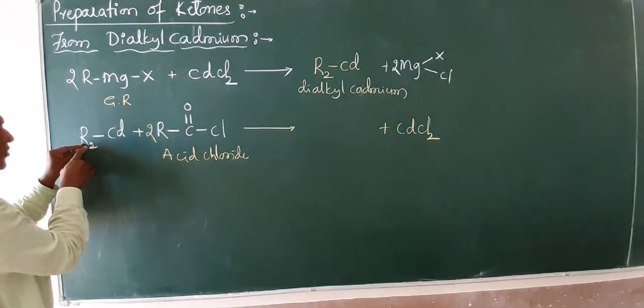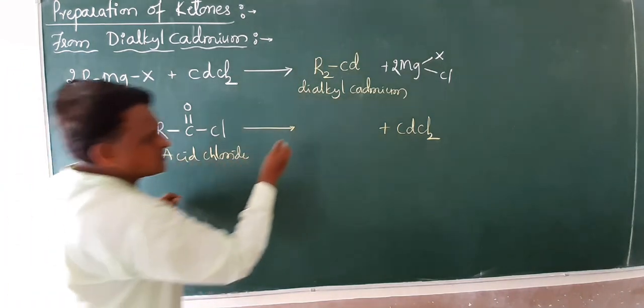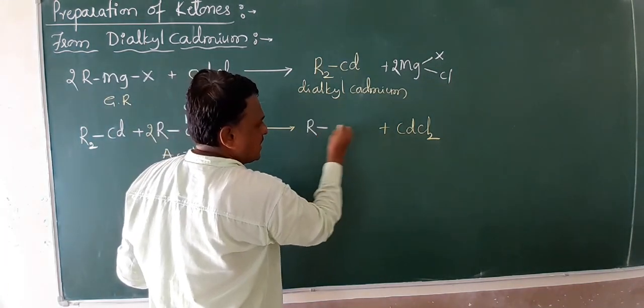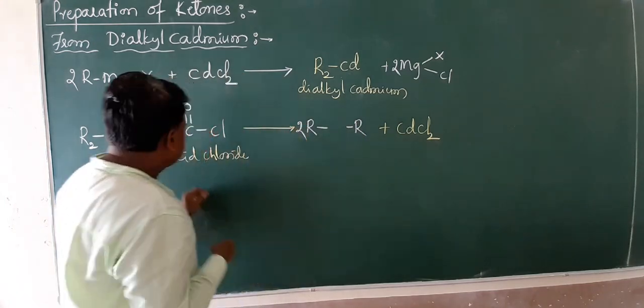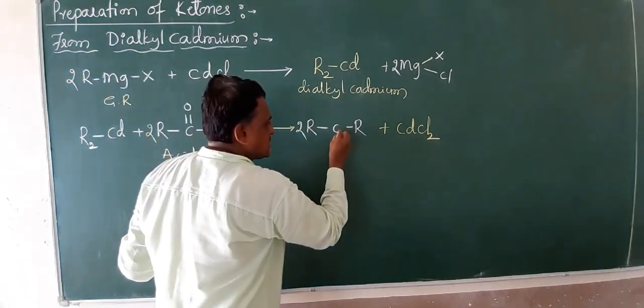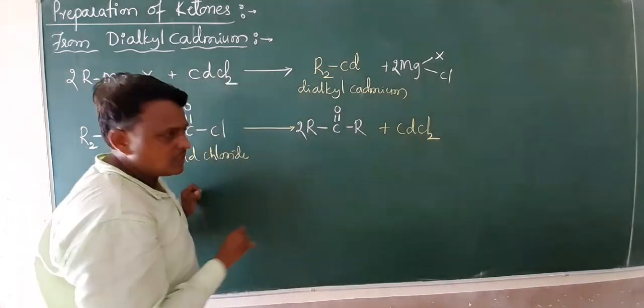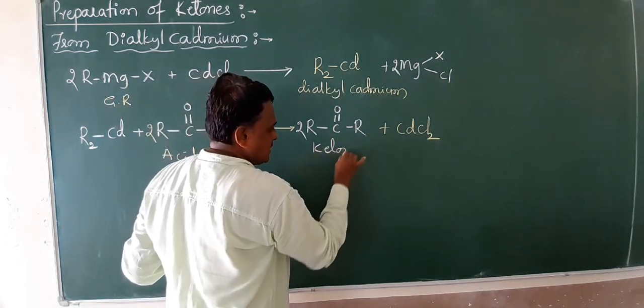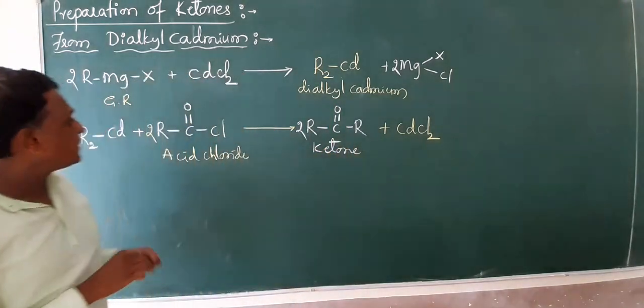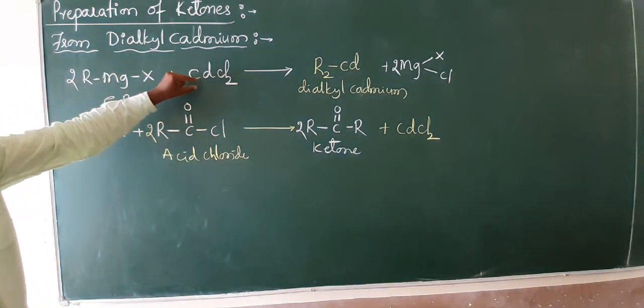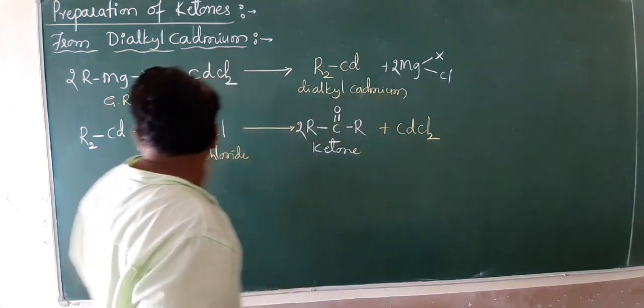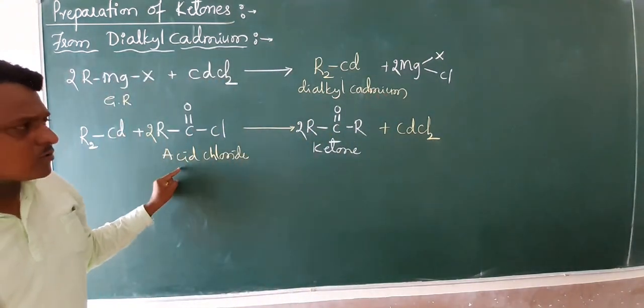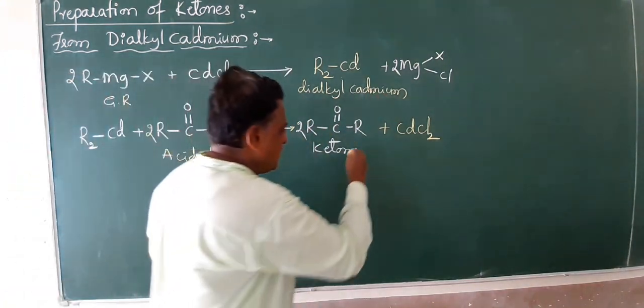What remains are the 2-alkyl groups. This is an R and this is your R, 2-alkyl groups, 2 moles, with carbonyl carbon. This is C, the 1-mole. Now this is your answer: ketone. When Grignard reagent reacts with cadmium chloride to form dialkyl cadmium, when this dialkyl cadmium reacts with acid chloride to form the ketone.